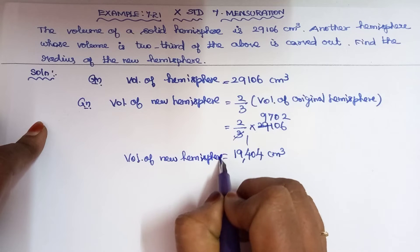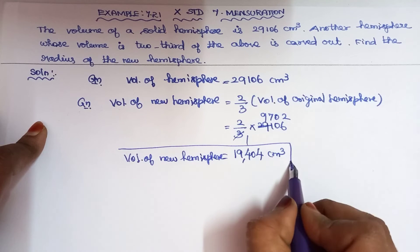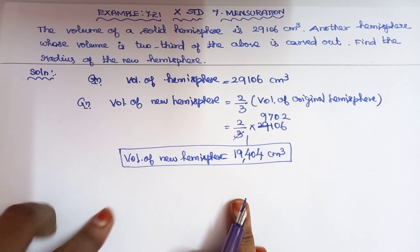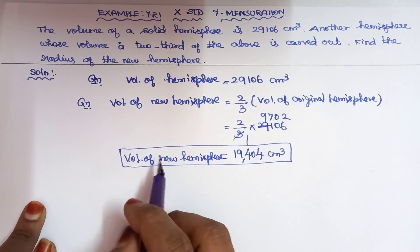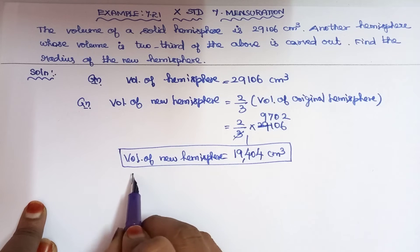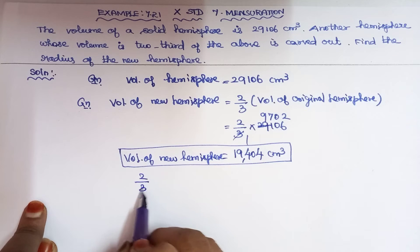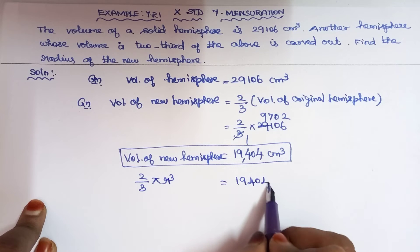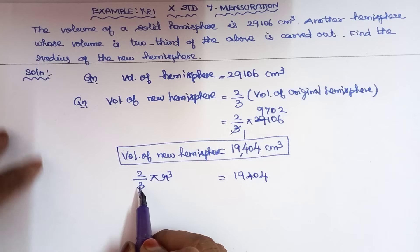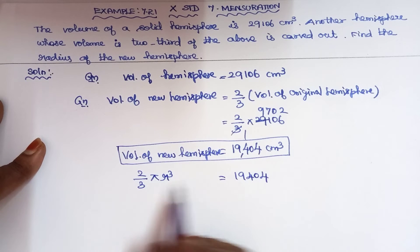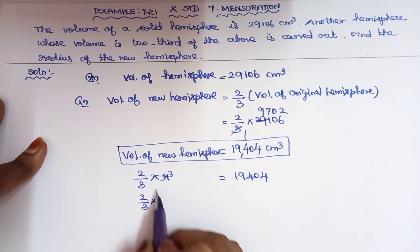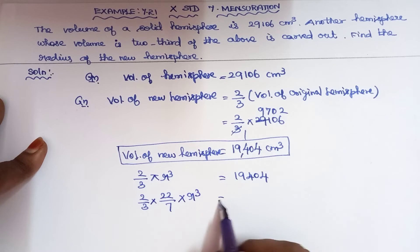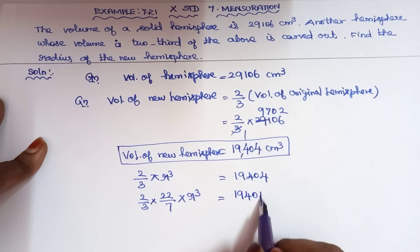For the new hemisphere, we apply the volume formula: volume of hemisphere equals 2 by 3 pi r cube, equal to 19404. Now we substitute the values: 2 by 3 into pi, which is 22 by 7, into r cube equals 19404.